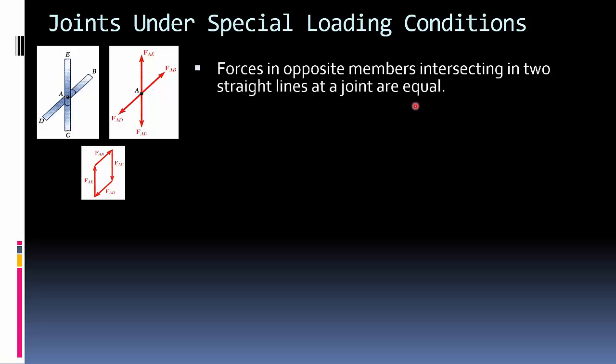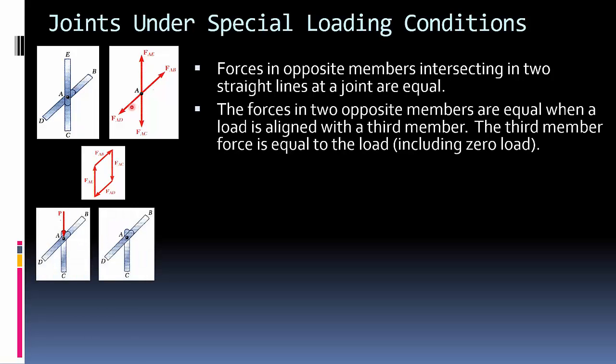Forces in opposite members intersecting in two straight lines at a joint are equal. So there's some special conditions where you can look at things and you can just say, hey, I know the force in that. So if you have these two members, if they're both straight, notice there's no triangles here, there's no changes in directions. You're going to know that this force has to equal this force, and this force has to equal that force. That comes up a little bit.